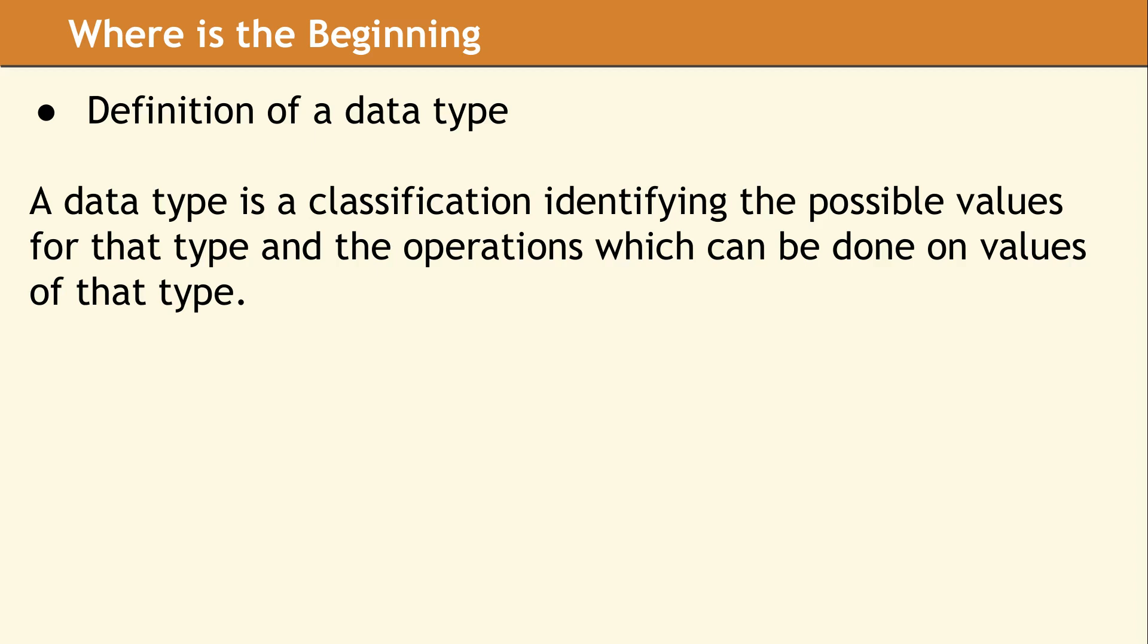So here's the definition of what a data type is. It's a classification identifying the possible values for that type and the operations which can be done on values of that type. So let's continue and look at various categories of data types.